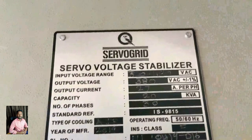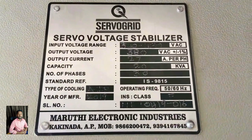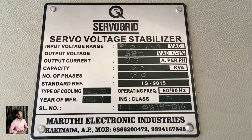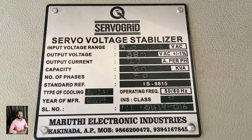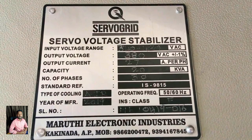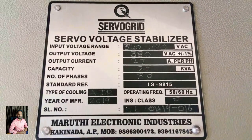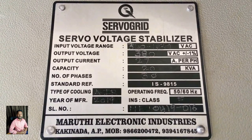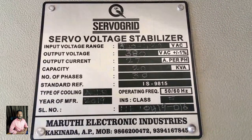The stabilizer is a servo voltage stabilizer. The input voltage range is 340V to 480V. The output voltage is 380V. The current is 27 amperes per phase. The capacity is 20KVA, 3-phase. The current per phase is approximately 18A within the 20KVA rating in the first phase.